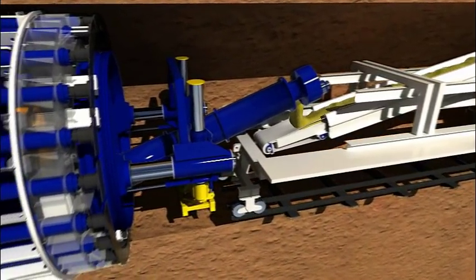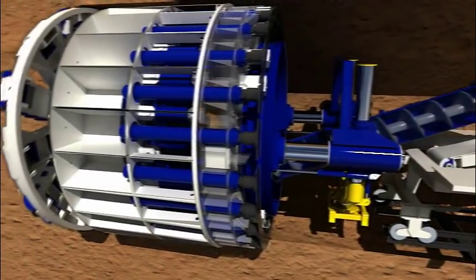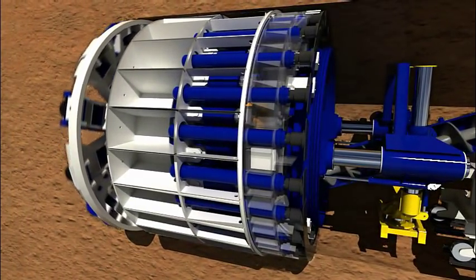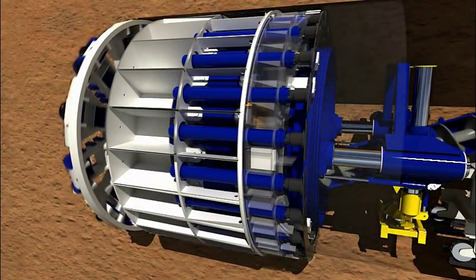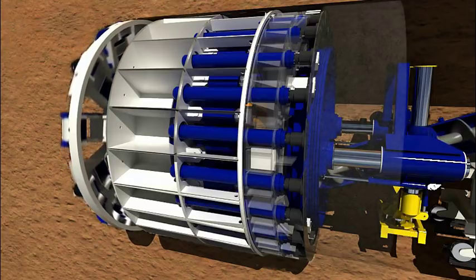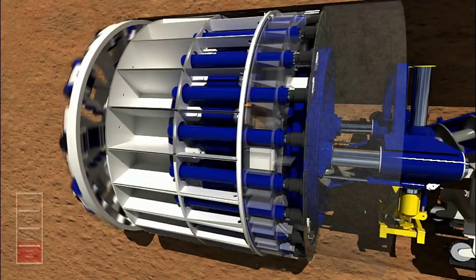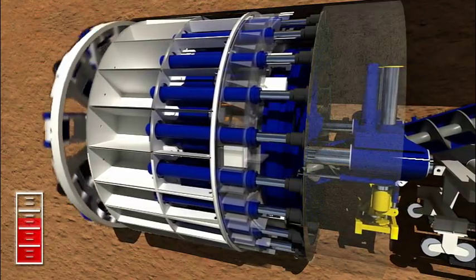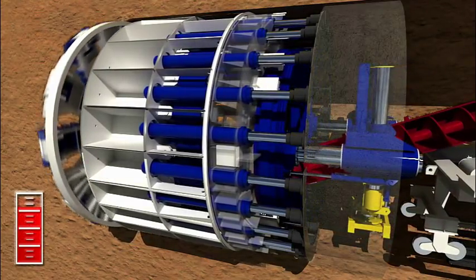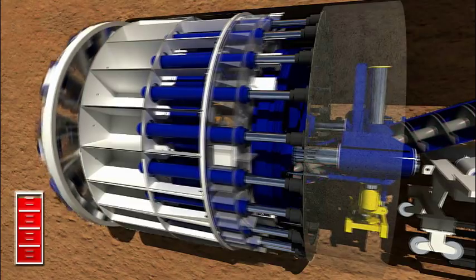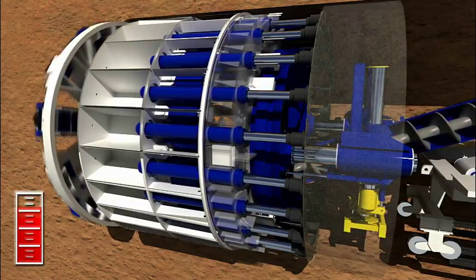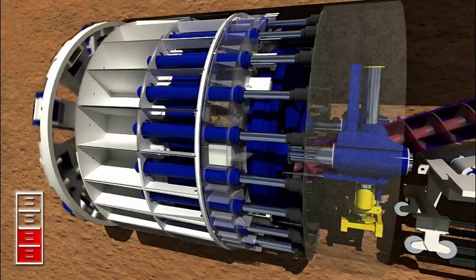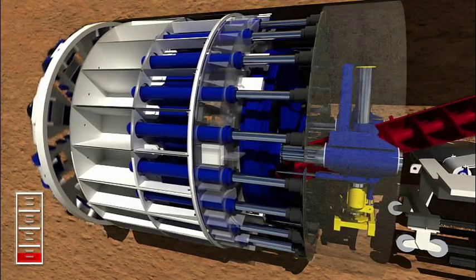The ability to balance the earth pressure is essential in order to safely and efficiently excavate the tunnel face. A TBM operator can control the pressure in the chamber continuously. To raise pressure, the operator can either increase the machine's rate of advance or decrease the rotation of the screw conveyor. To lower pressure, the operator does the opposite. Either decrease the rate of advance or increase the rotation of the screw conveyor.